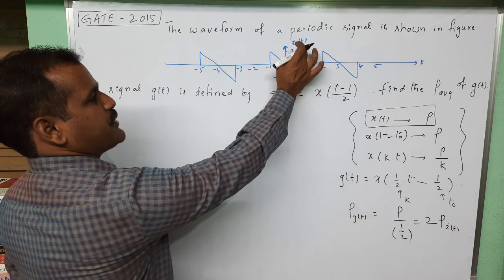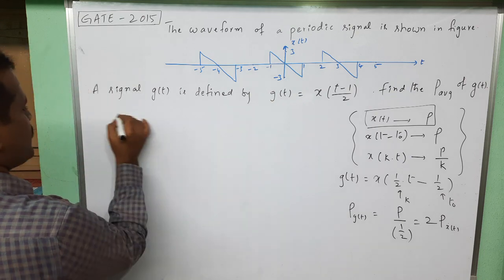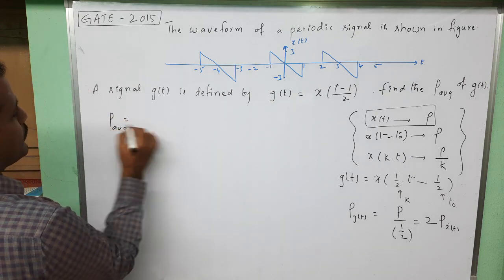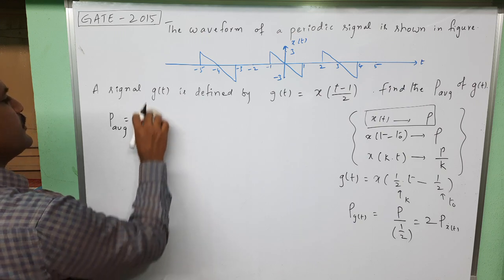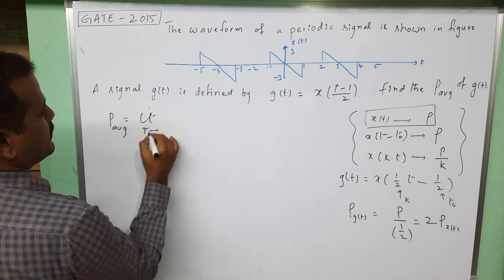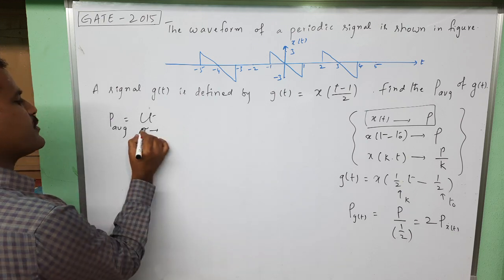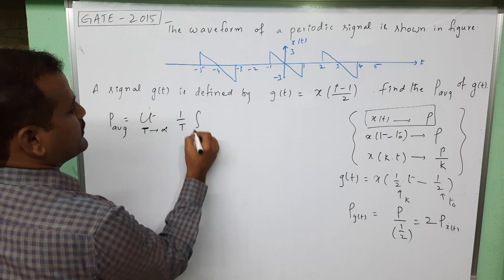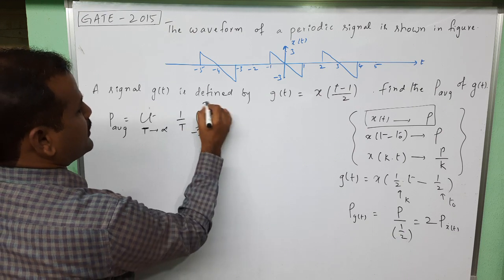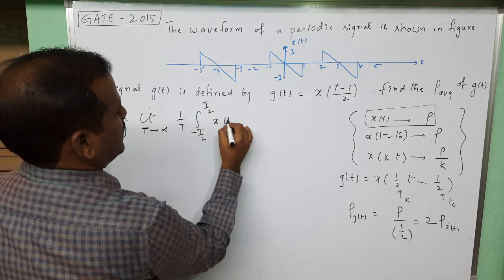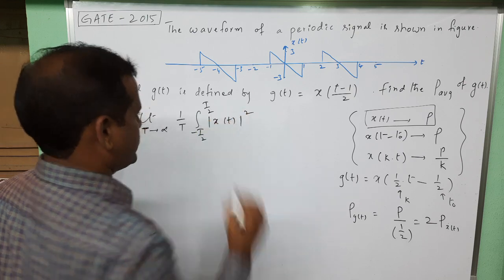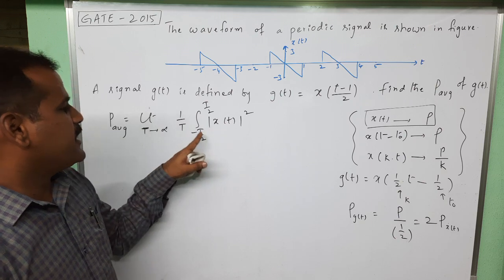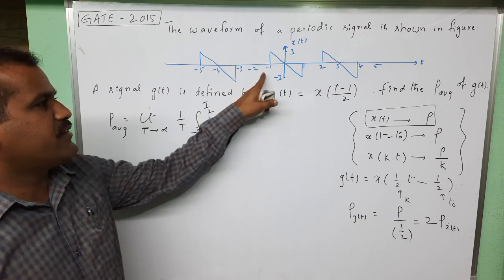First let us calculate the power of this periodic signal. The power formula for a periodic signal is (1/T) times the integral from -T/2 to T/2 of |x(t)|² dt. This is the power formula for a periodic signal, where T stands for the time period.